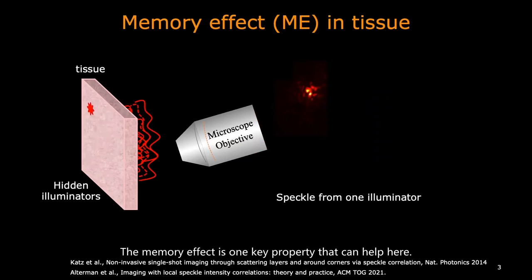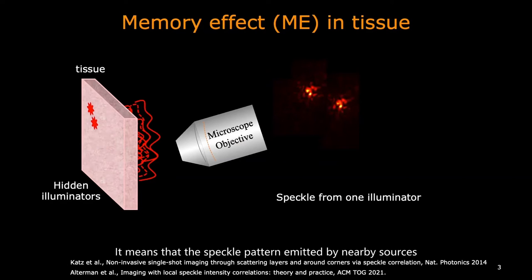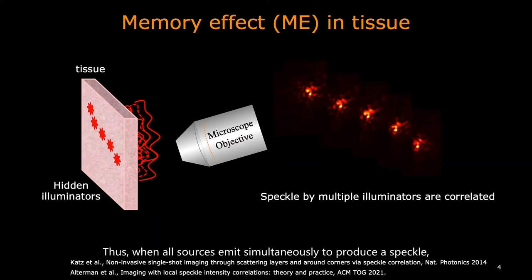The memory effect is one key property that can help here. It means that the speckle patterns emitted by nearby sources are correlated, shifted versions of each other. Thus, when all sources emit simultaneously to produce a speckle, we can detect correlation inside a speckle image.